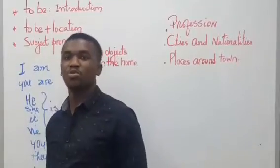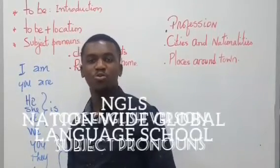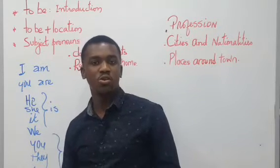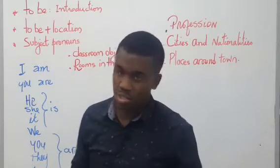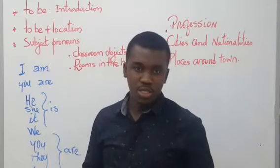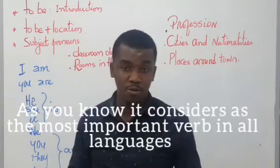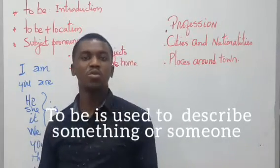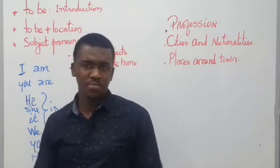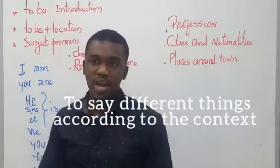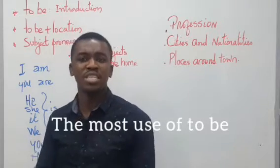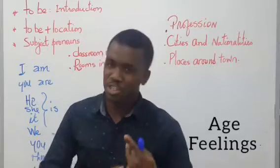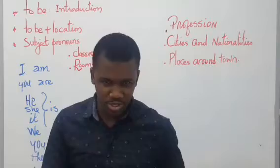Hello everyone, welcome to NGLS, Nationwide Global Language School, with your English teacher. Today I am going to explain something which is very important in the English language. We are going to talk about 'to be.' As you know, 'to be' is considered the most important verb in English. It is used to describe something or someone, and it is used to talk about name, age, feeling, profession, and nationality, especially in the present tense.